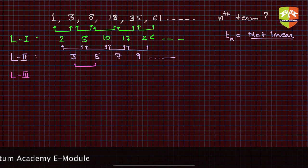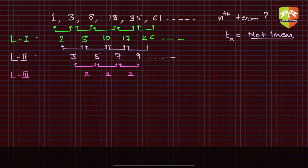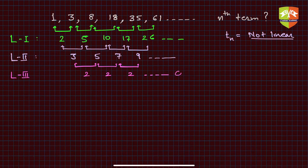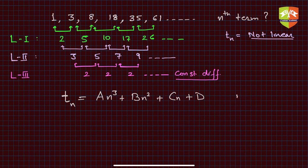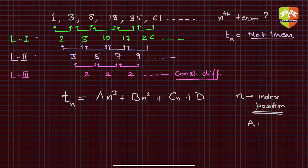The third level difference gives us 2, 2, and 2 — a constant difference. This is where we stop. In cases where the third level of difference is constant, the nth term will be given by: T(n) = an³ + bn² + cn + d, where n is an integer denoting the index or position, and a, b, c, d are mostly rational numbers.